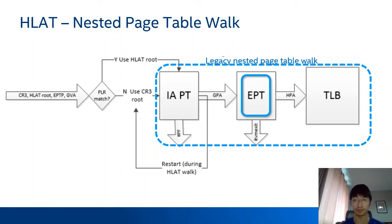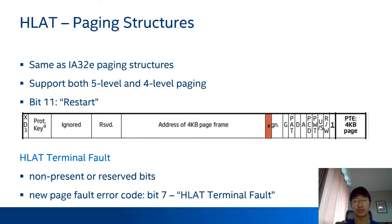During the HLite walk, the page walker may encounter a restart bit in an HLite page table entry. In that case, the page walker would restart the page walk through the CR3 page table. HLite also introduces additional checks in EPT. HLite paging structures are almost the same as IA-32e paging structures — it supports both 5-level and 4-level paging, and bit 11 is the restart bit. Setting this bit causes the page walk to restart with the CR3 page table. During the HLite walk, the CPU would raise a page fault exception if the page walker encounters a non-present entry or misconfiguration, such as reserved bits set in an HLite PTE. In that case, CPU sets bit 7 of the page fault error code to indicate this is an HLite terminal fault.